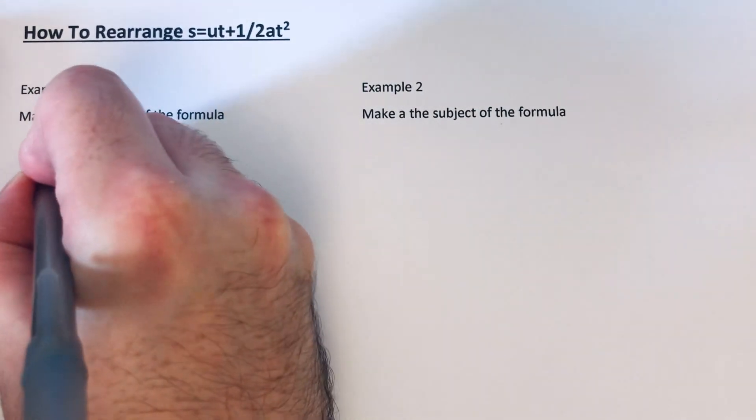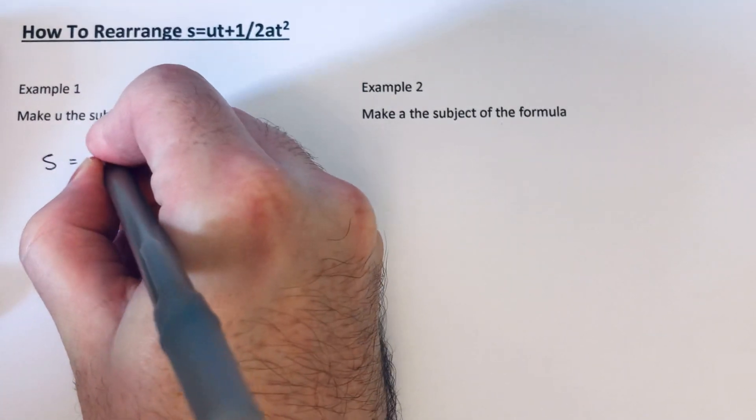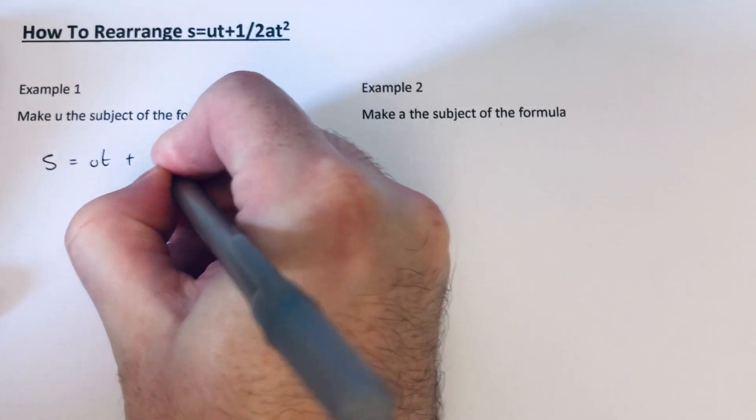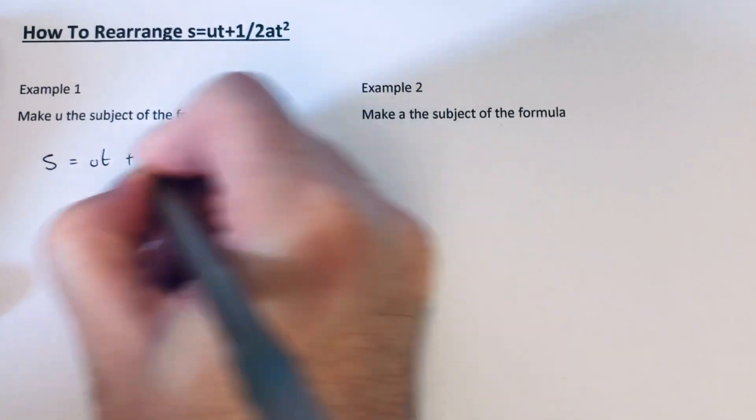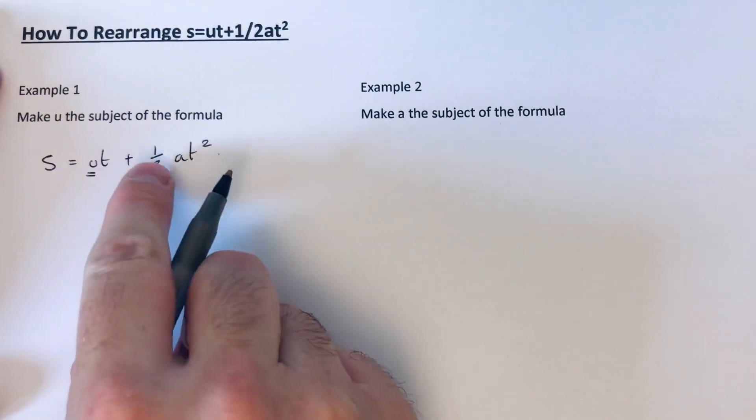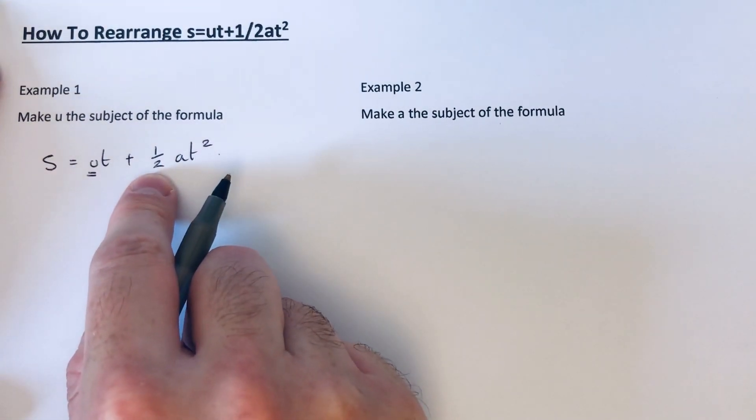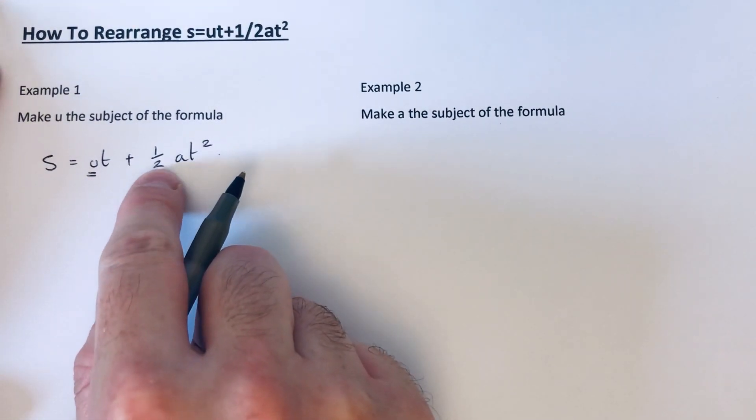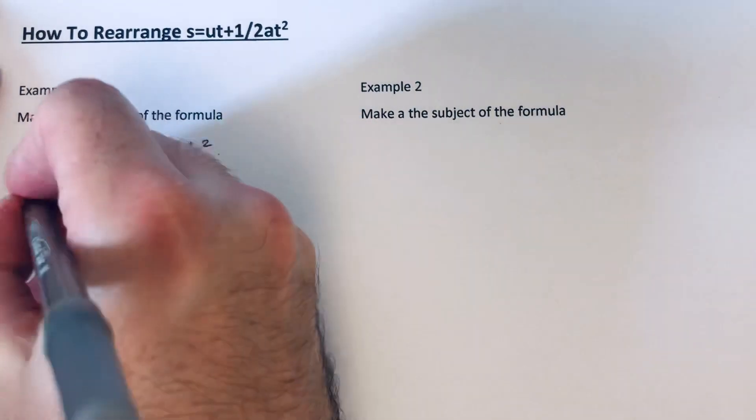So we just copy our formula down. We're looking to make u the subject. The first thing we're going to do is multiply everything by 2 to get rid of the fraction here.